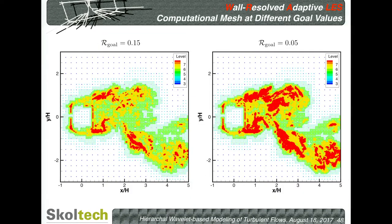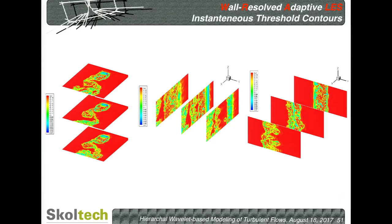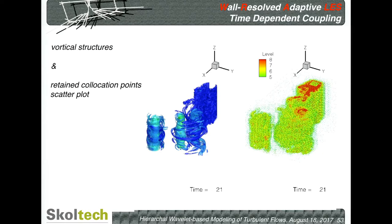Here you can see a slice of the mesh for two different target subgrid scale dissipation levels: 15% turbulence modeling and 5% turbulence modeling. As expected, the less you need to model, the more you have to resolve, resulting in a finer mesh. Examples of this approach applied to turbulent channel flow show results compared to experimental data from Buron — quite good agreement. The instantaneous threshold field is shown to be quite noisy, following the structures of the solution. In a three-dimensional example, the isosurface of epsilon, isosurface of vorticity, and the mesh all align with each other.